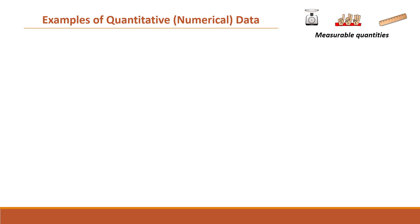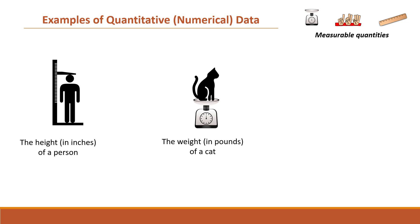Let's start with examples of quantitative or numerical data. Remember that's the one representing measurable quantities. So the height in inches of a person represents quantitative data, since height is used to measure how tall a person is. Following the same logic, it's now easy to see why the weight in pounds of a cat also represents quantitative data.